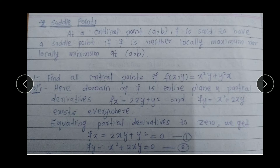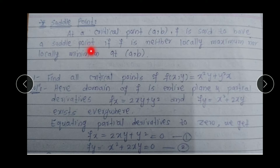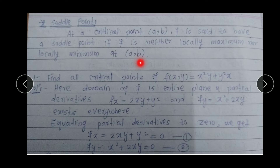Such points where the first partial derivatives Fx and Fy are 0, or where Fx does not exist, or Fy does not exist, or both partial derivatives do not exist — such points are called Critical Points or Stationary Points of F. Next is the definition of the Saddle Point.